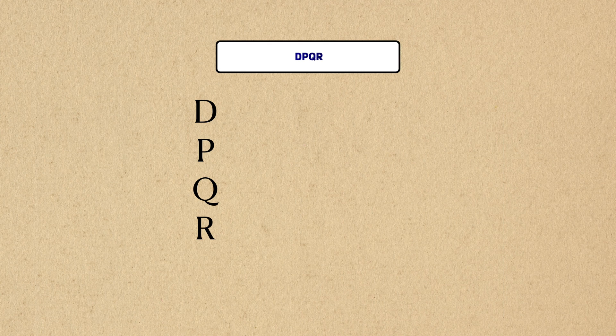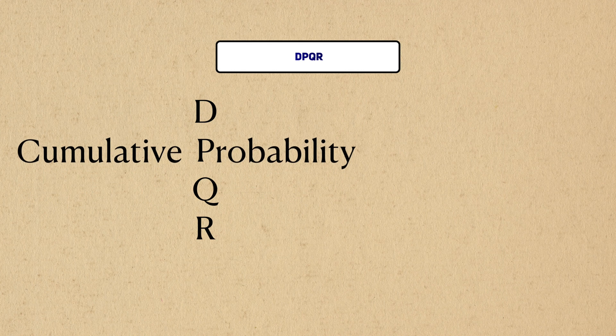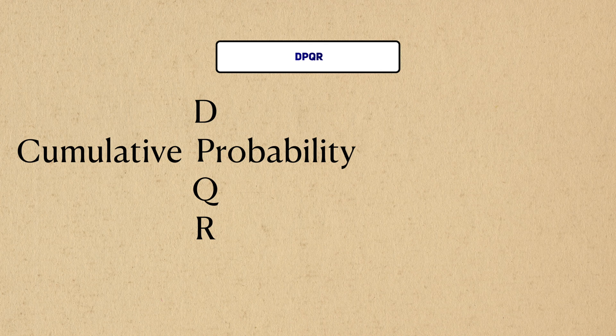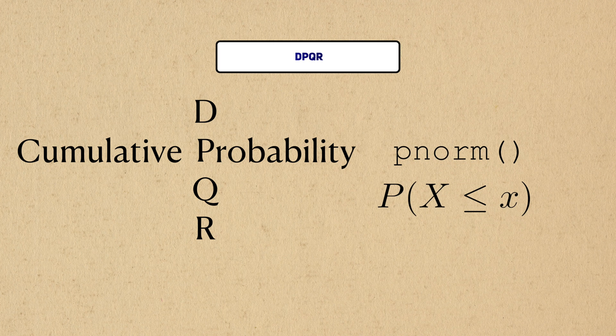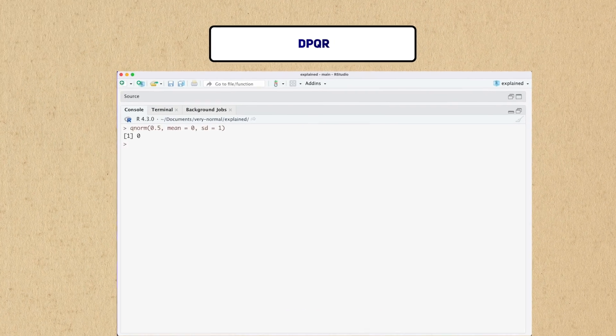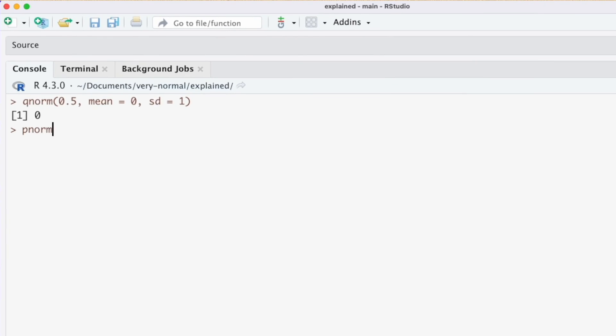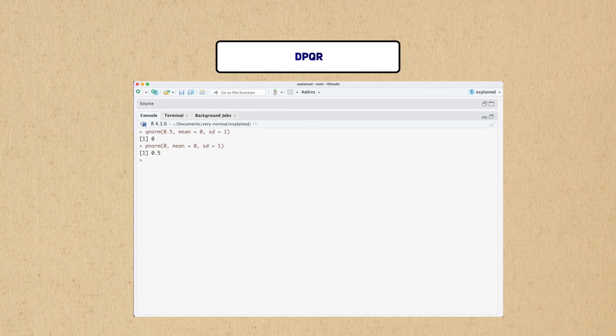In an annoying twist of fate, p, for some reason, stands for cumulative probability. If you know why it's p, and not c, let me know in the comments because I still mix it up to this day. The pnorm function gives us the cumulative probability of a particular normal distribution. Going off the previous example, we saw that the mean is the 50th quantile of the normal distribution, so we should also see this reflected in pnorm. If I enter the value 0 into the pnorm function, I get back the cumulative probability of 0.5.